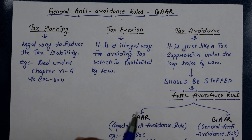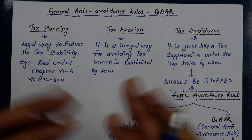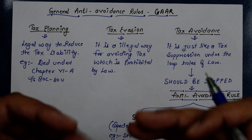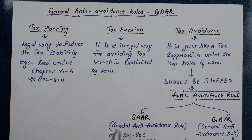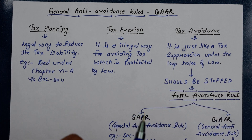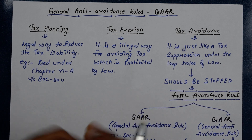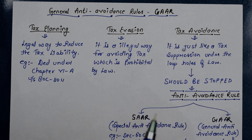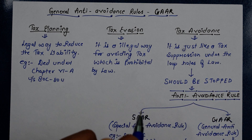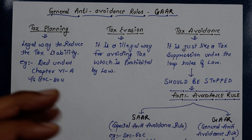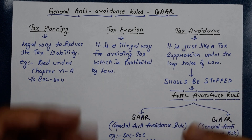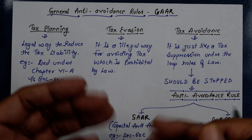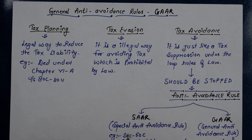Tax is a compulsory payment which every person has to pay to the government. When you earn income, you are required to pay this tax. It is imposed on every member of the general public who earns income. There are two types of tax: direct tax and indirect tax.